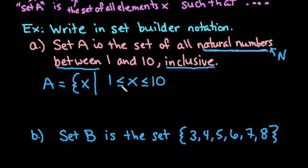If it did not include it, then we would not have this line underneath. We would just write it as 1 less than X less than 10, or you could read it as X is between 1 and 10 inclusive. And we also have to say that X has to be an element of N.